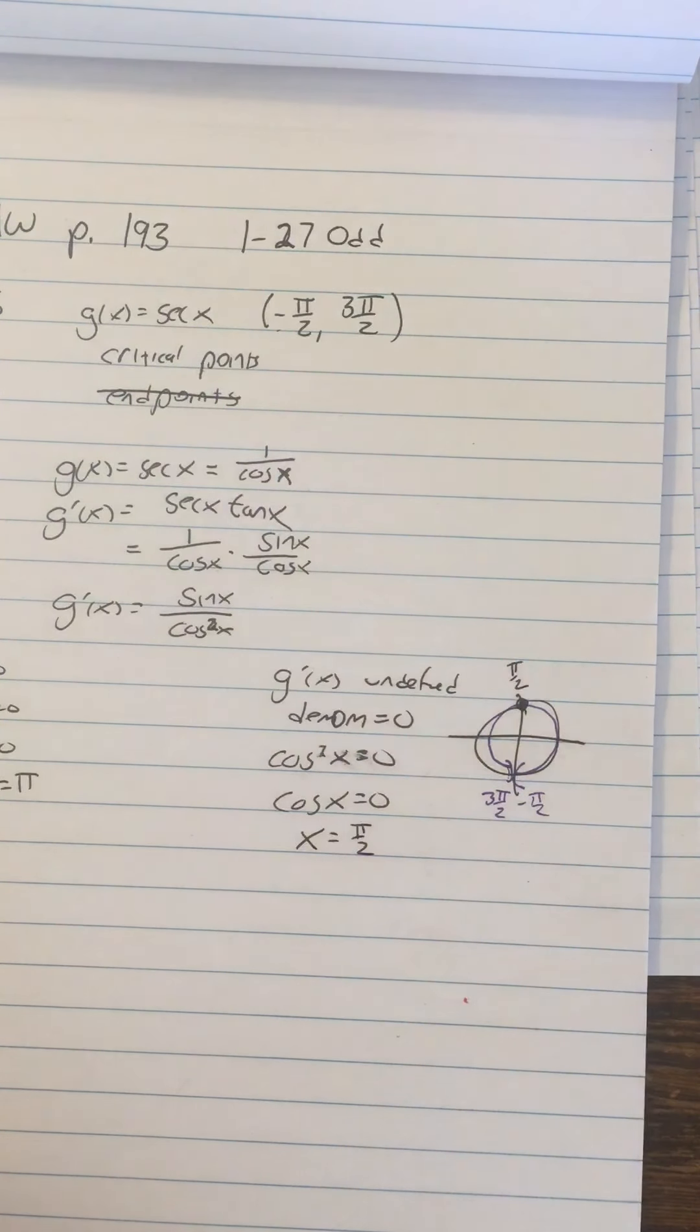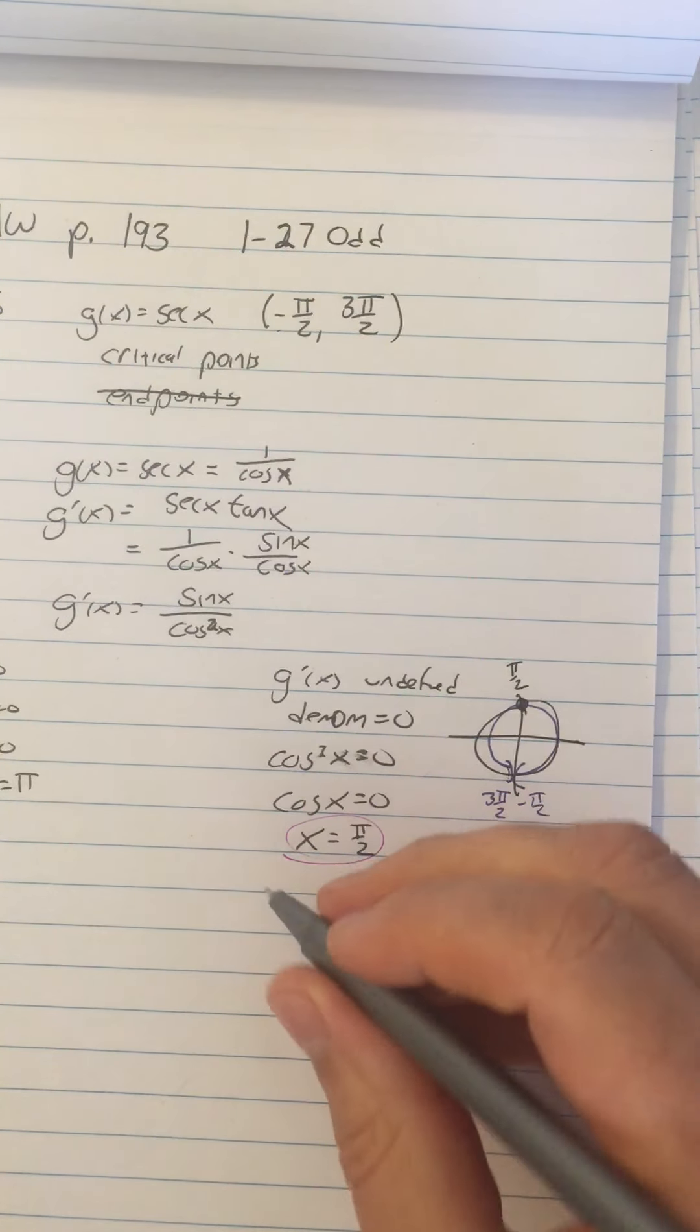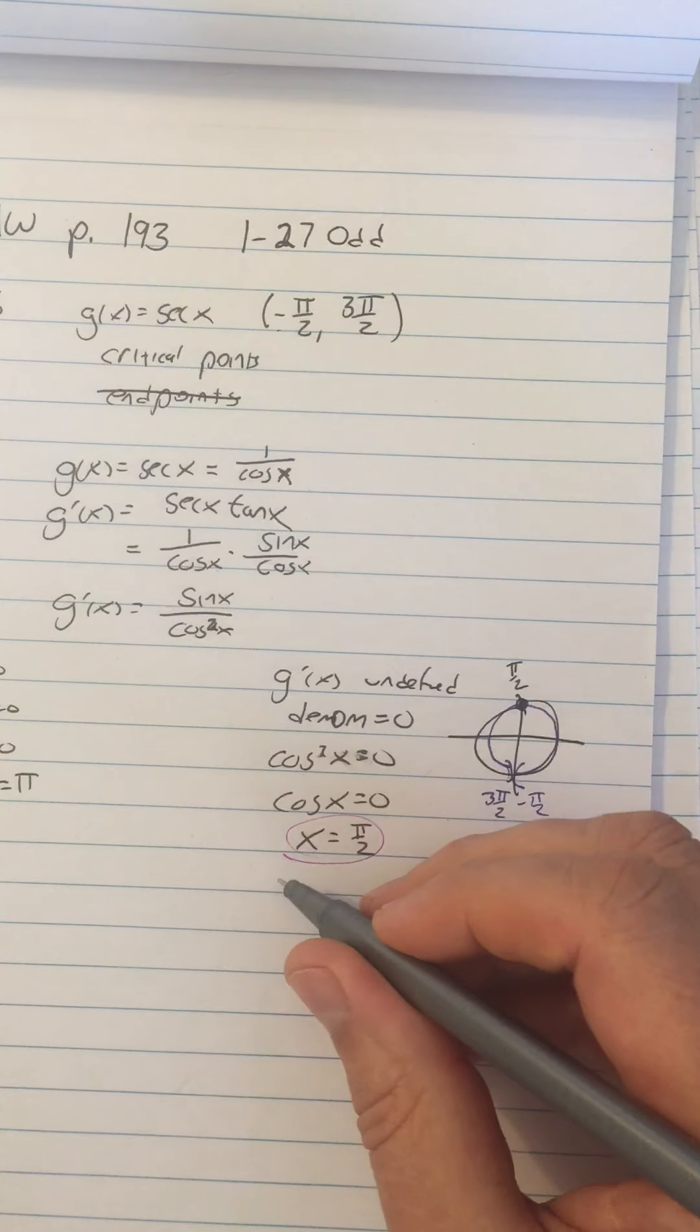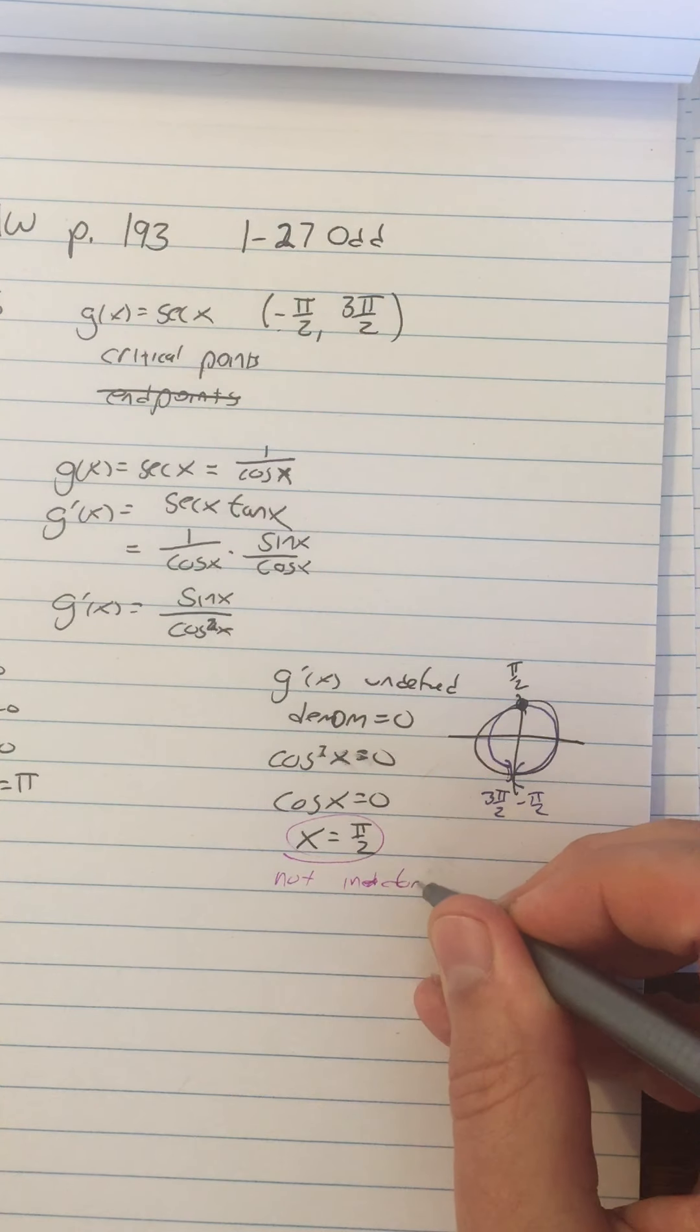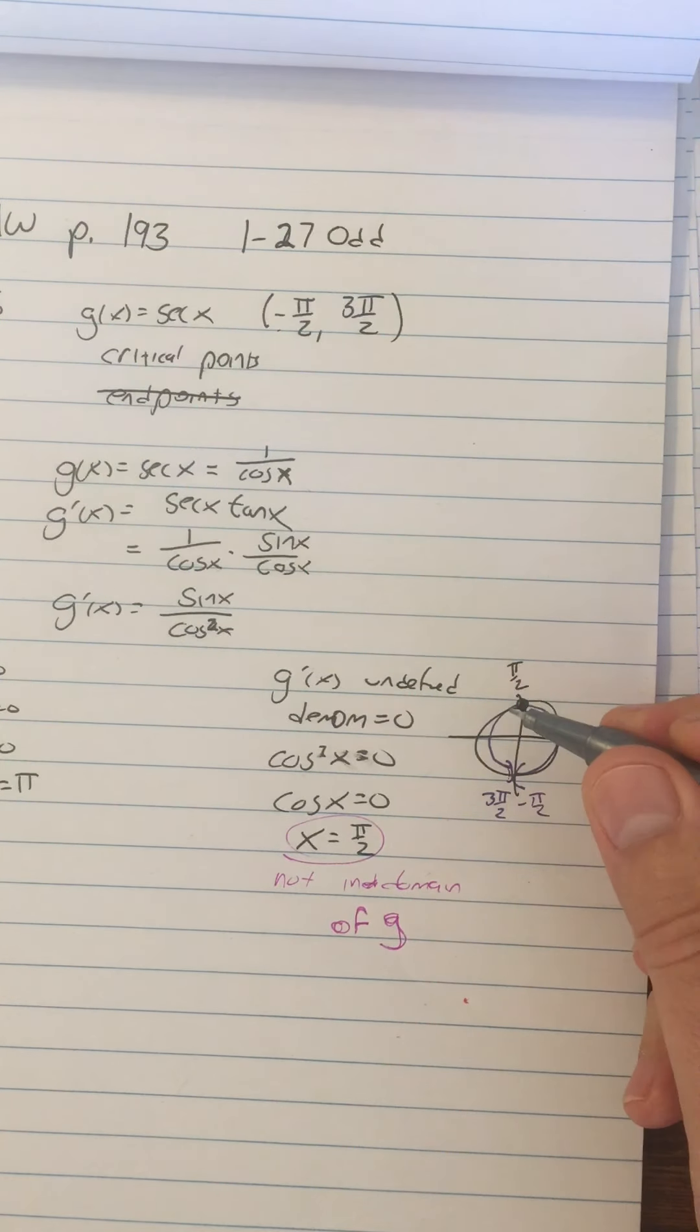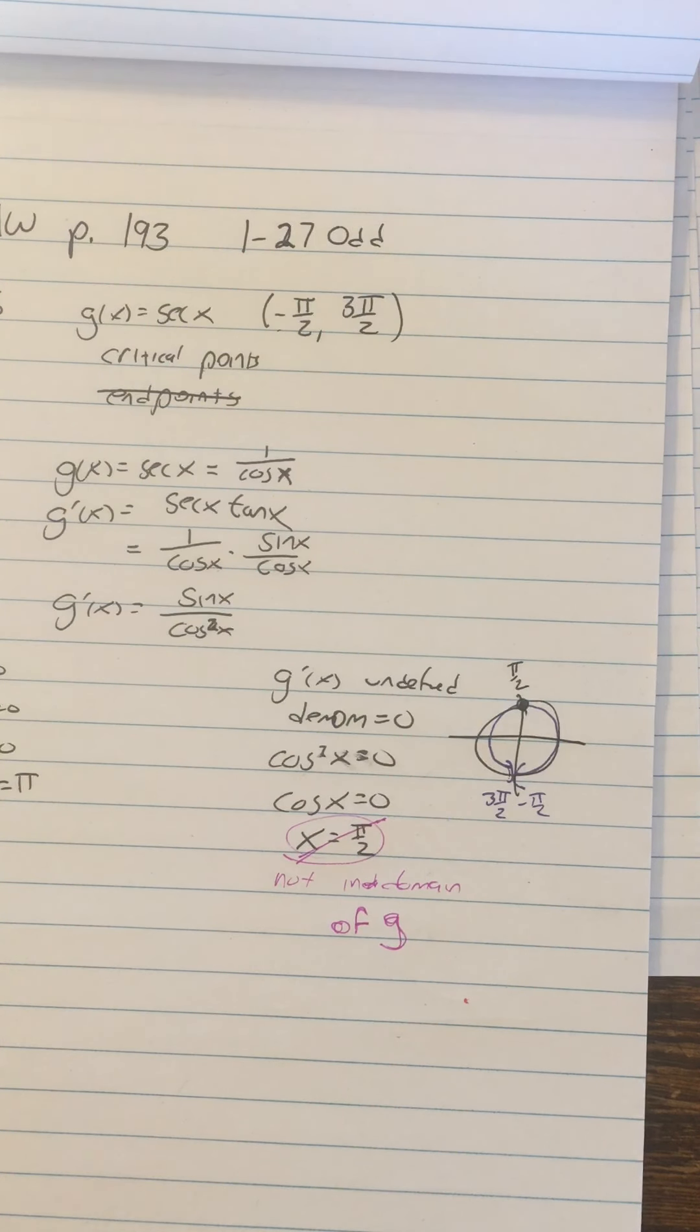But then we're going to say, if I put pi over two back into the original function, what I get is undefined. Because secant of pi over two is undefined, because it's one over cosine of pi over two is one over zero. Therefore, this is not in domain of G. We already know it's not in the domain of G prime. But it's also not in the domain of G. So we can't say it's a critical point of G, because it's not a point of G at all.